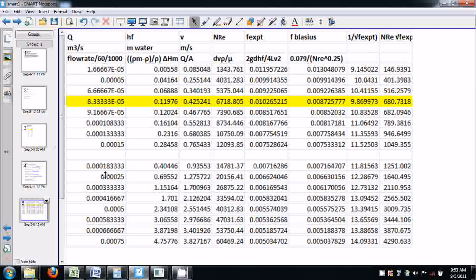These are the calculations for all the readings: different flow rates in meter cube per second, HF is the pressure drop in meters of water column, velocity, Reynolds number, friction factor experimental, friction factor Blasius, and 1 by root of F experimental. NRE multiplied by root of experimental—these two are to verify Nikuradse correlation.